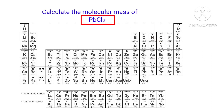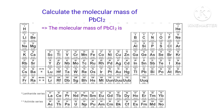In PbCl2, there are 1 lead atom and 2 chlorine atoms present. So the molecular mass of PbCl2 is 207.2 plus 35.453 multiplied by 2, which equals 278.106 grams per mole.